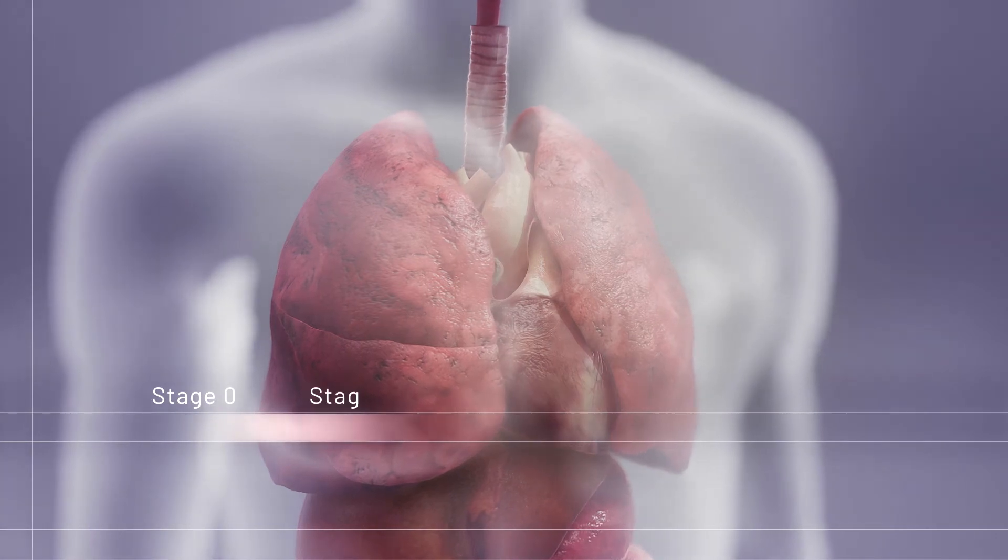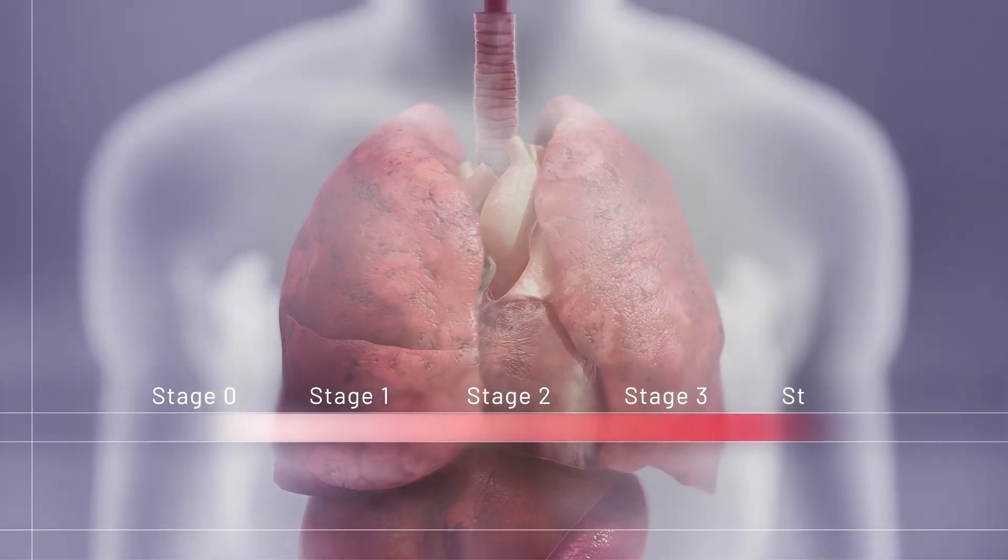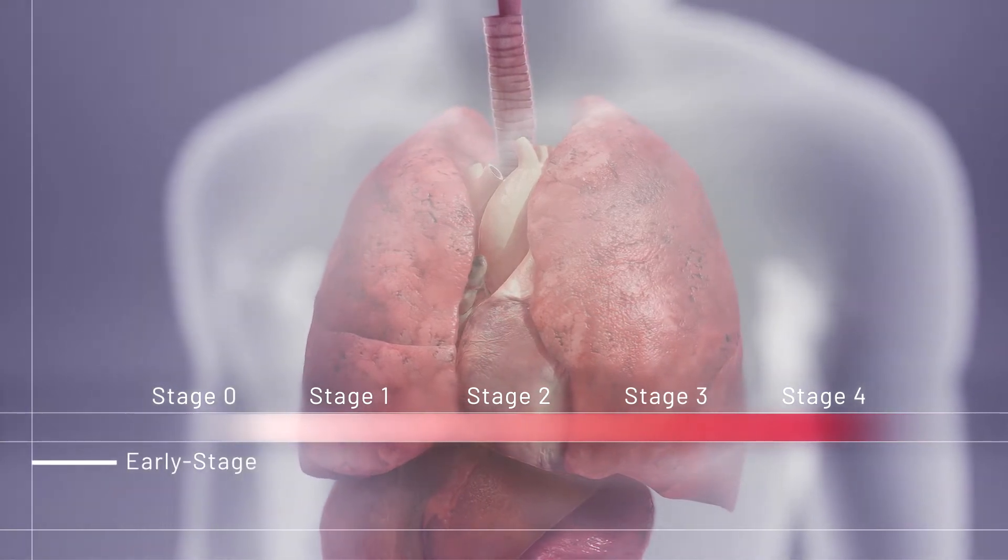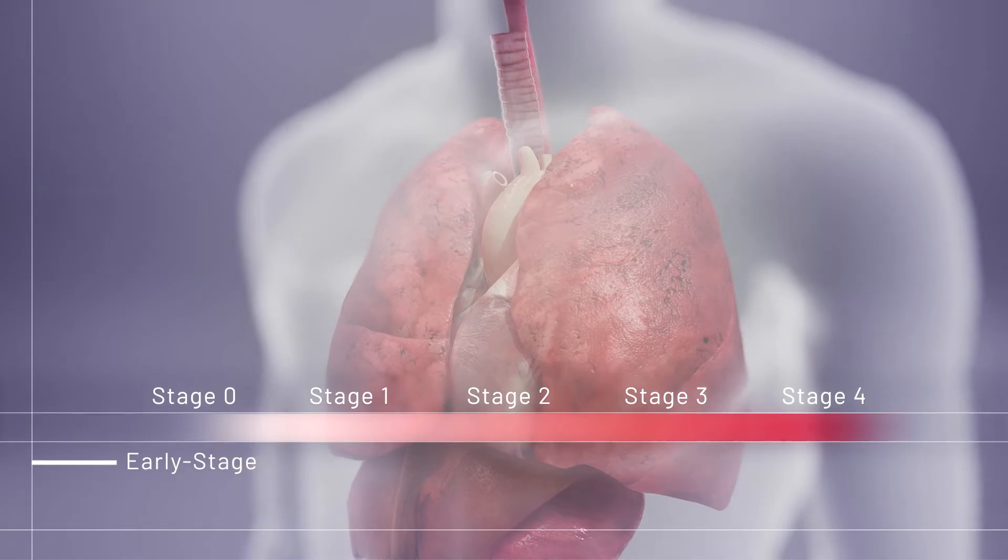NSCLC stages run from 0 to 4, depending on how much the cancer has spread. In early-stage NSCLC, the cancer has not yet spread to the lymph nodes or other parts of the body.